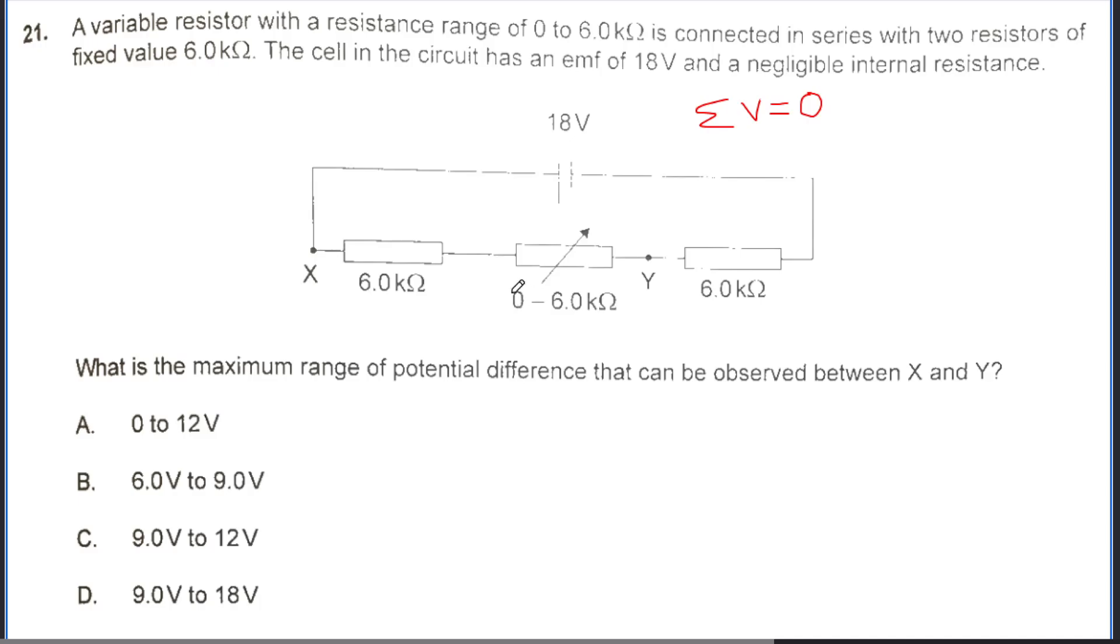Consider the case where the resistor has its minimum resistance of 0. All of this 18 volts is going to be dissipated in these two resistors. In each resistor, since these are of the same resistance, 9 volts is going to be dissipated because 9 plus 9 equals 18. So we can eliminate A, we can eliminate B, it's either going to be C or D.